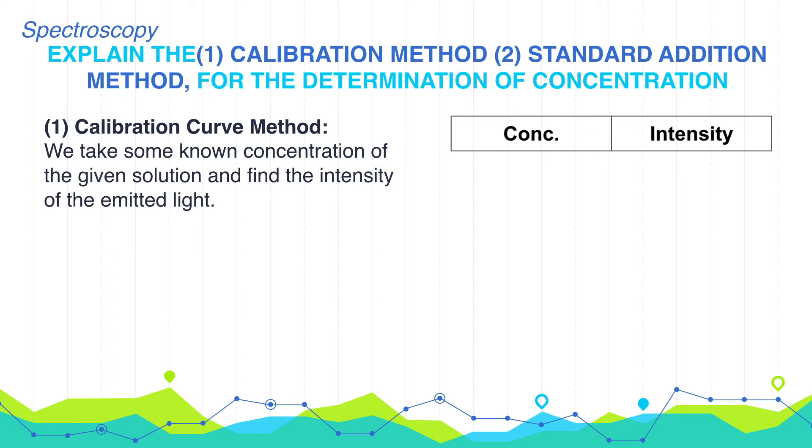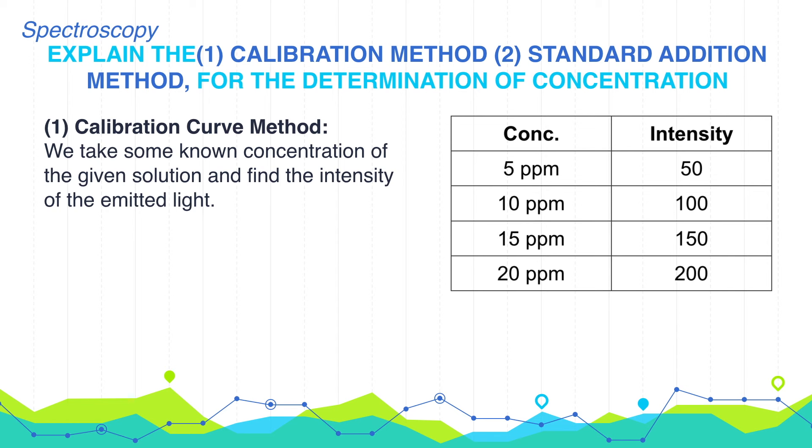For example, here we have prepared different concentrations: 5 ppm, 10 ppm, 15 ppm, 20 ppm, 25 ppm, and 30 ppm of the known concentration solution. And we have also found its intensity, which is listed in the table.